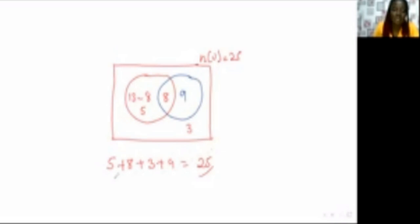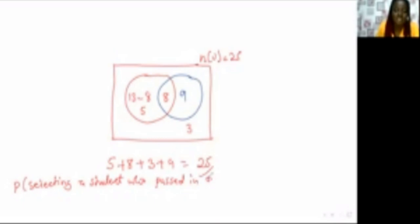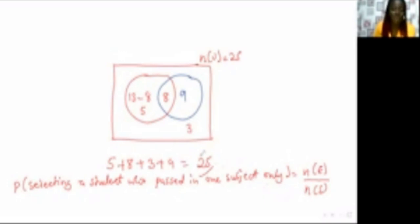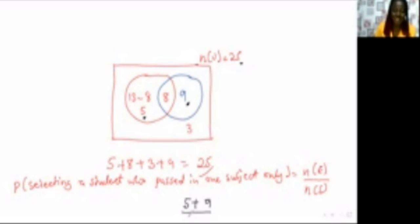Then comes the probability question: what is the probability of selecting a student who passed in one subject only? One subject only means Mathematics only (5) plus Science only (9). So 5 + 9 = 14 over the sample space of 25. We get 14 out of 25. If you can simplify further, do so.